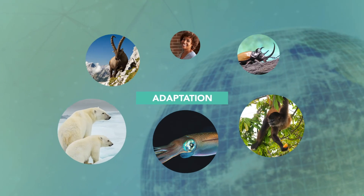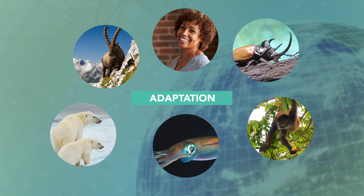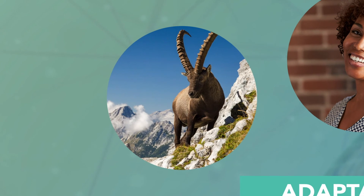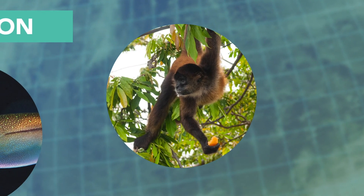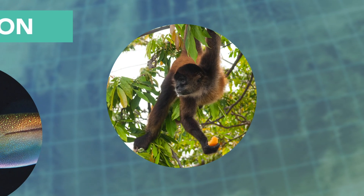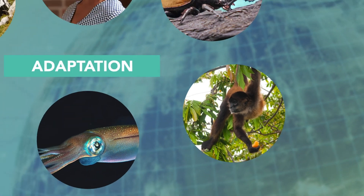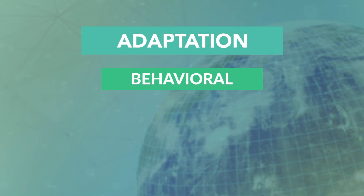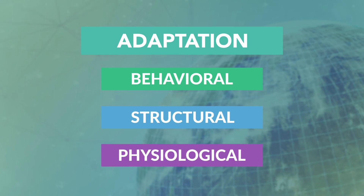Adaptation refers to the fit of an organism to its environment. It may focus on the short-term processes of how an organism survives as well as the physical changes that result from long-term exposure to a particular environment. Adaptation may occur in three ways: behavioral, structural, and physiological.